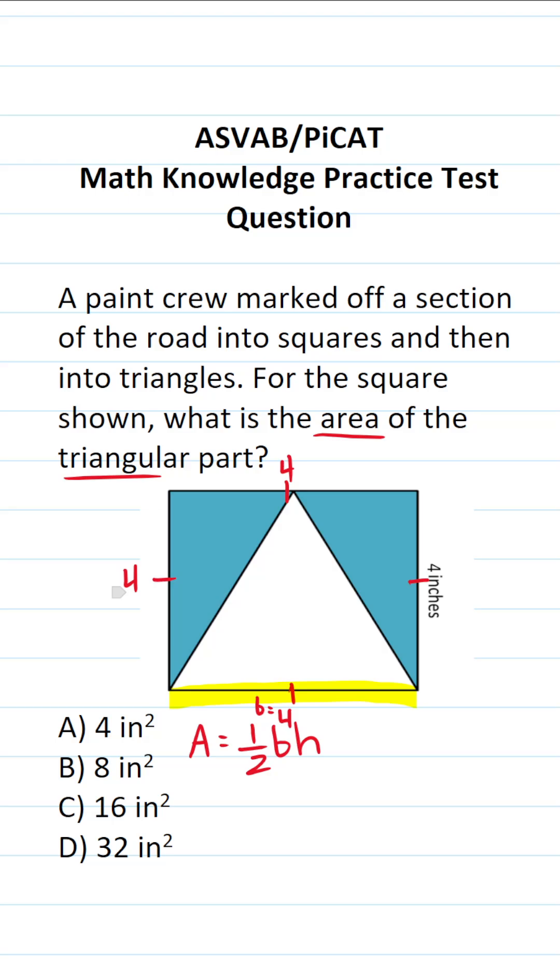Now we need to determine the height of this triangle. The height of a triangle is going to be from its highest point or its apex straight down, like so. And as you can see, this is going to be the same thing as the side length of the square. So the height of this triangle is also going to be four inches.